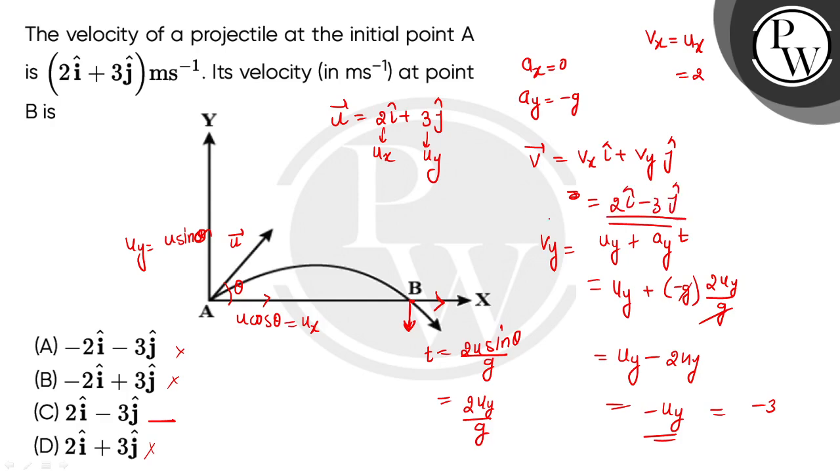Here we can see that the final velocity vector at point B is 2i minus 3j. We can see that C is given, C would be the correct answer. I hope you will understand, thank you so much.